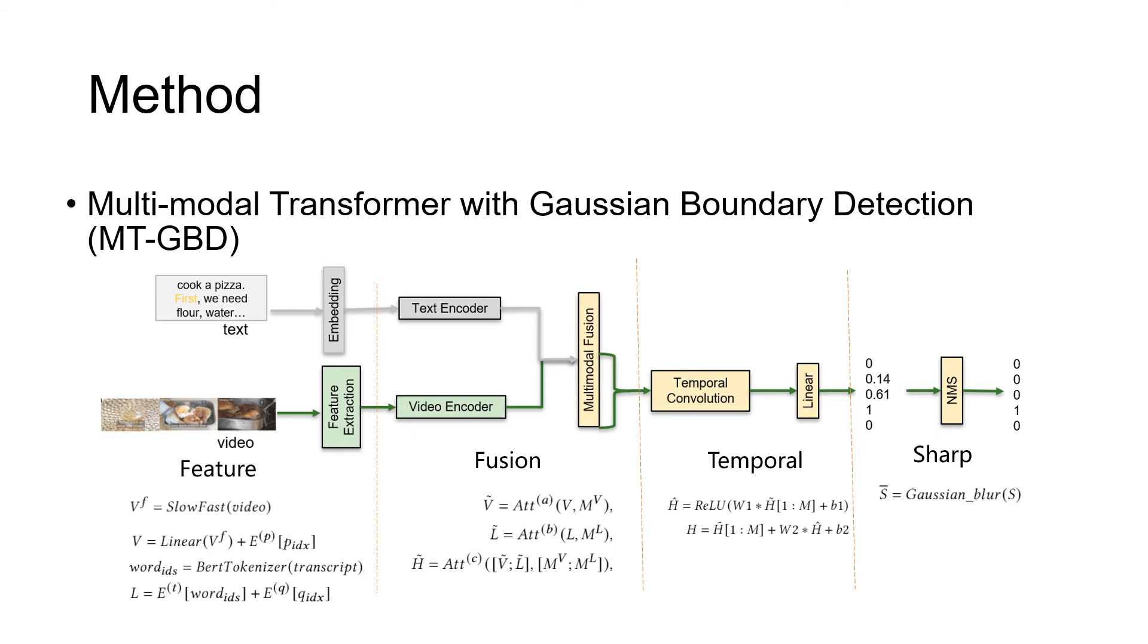And finally, we adopt the NMS to sharpen the predicted boundary. During the training phase, we use 1D Gaussian to blur the ground-truth boundary. And during the test phase, instead of simply predicting each frame by a threshold, we use a non-maximal suppression for boundary detection.